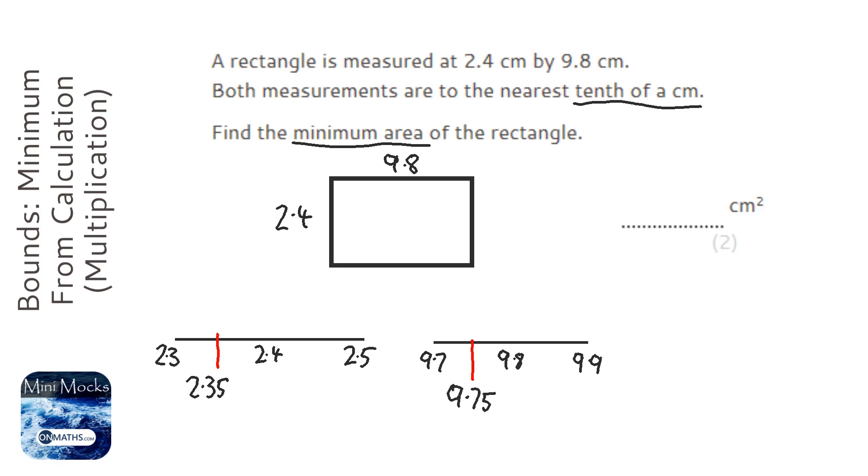So instead of 9.8 there, it's going to be 9.75. In fact it's an area, so I just need the one at the top, and instead of 2.4, it's going to be 2.35.